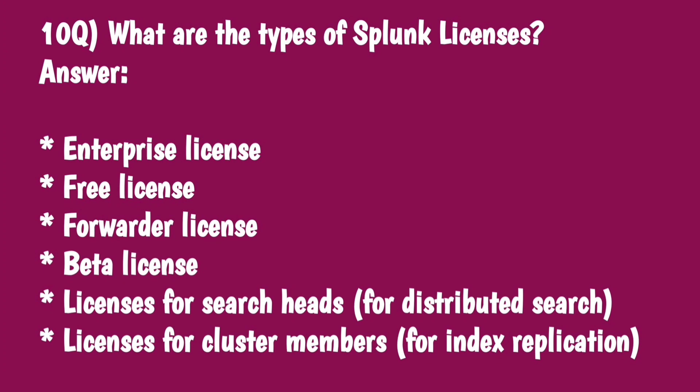What are the types of Splunk licenses? Enterprise license, free license, forwarder license, beta license, licenses for search heads for distributed search, and licenses for cluster members for index replication.